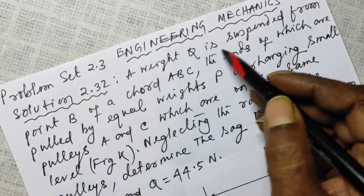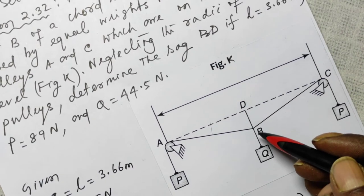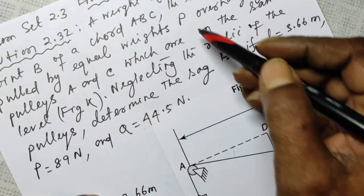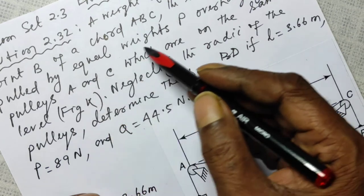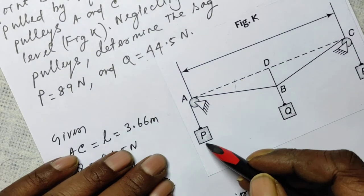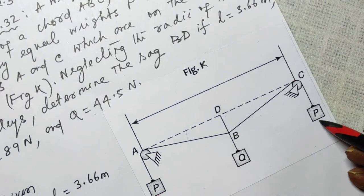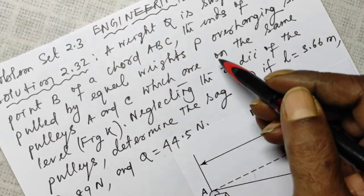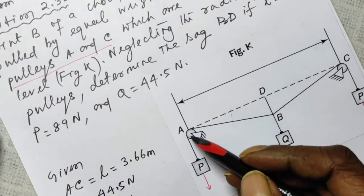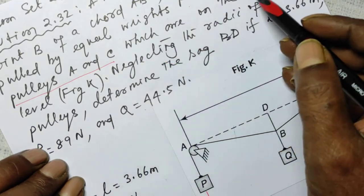Now look at the problem. A weight Q is suspended from point B of a chord ABC. A-B-C is a chord, the ends of which are pulled by equal weights. This end of the chord ABC is pulled to one side by a weight P, and the other end is pulled to the other side by an equal weight P, overhanging small pulleys. There is a pulley at A and a pulley at C, which are on the same level.